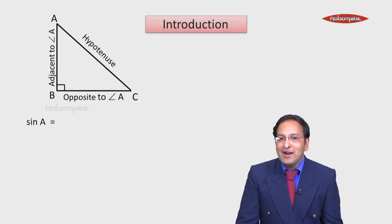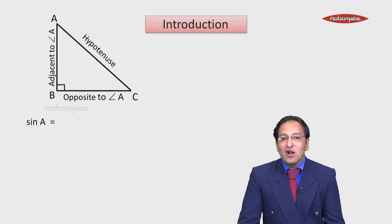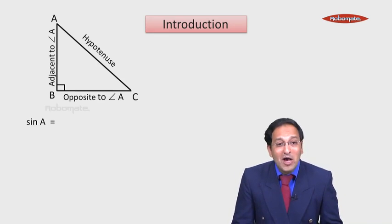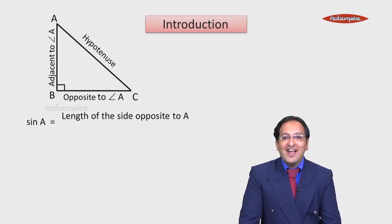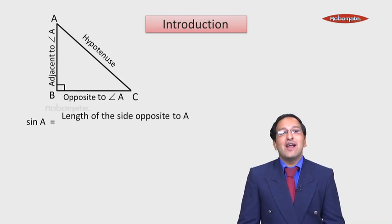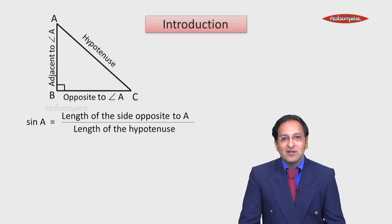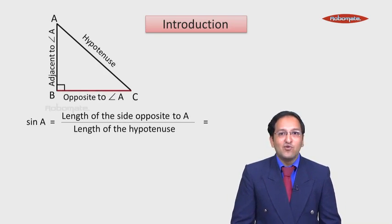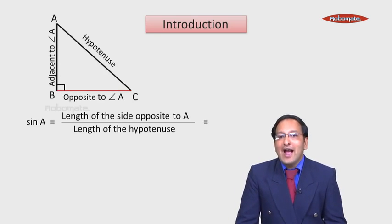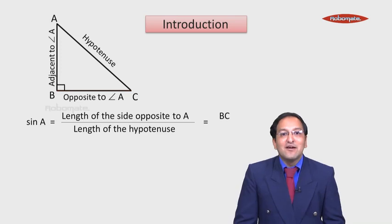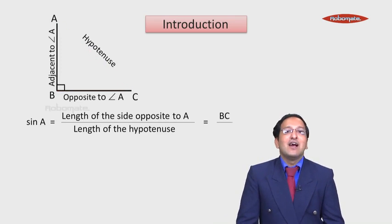Certain trigonometric ratios are defined as follows. Sin A is equal to the length of the side opposite to A divided by the hypotenuse. From the figure, the length of the side opposite to angle A is BC, divided by hypotenuse AC. So sin A equals BC upon AC.